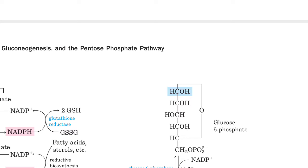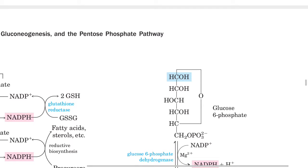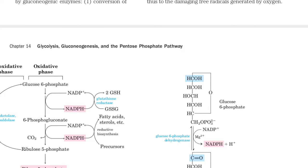In unit 4 so far we have studied glucose metabolism — glycolysis, fate of pyruvate, aerobic respiration, fermentation, TCA cycle (complete decarboxylation of glucose), and gluconeogenesis. In this lecture we will discuss the metabolic pathway called Pentose Phosphate Pathway, also known as Hexose Monophosphate Shunt.